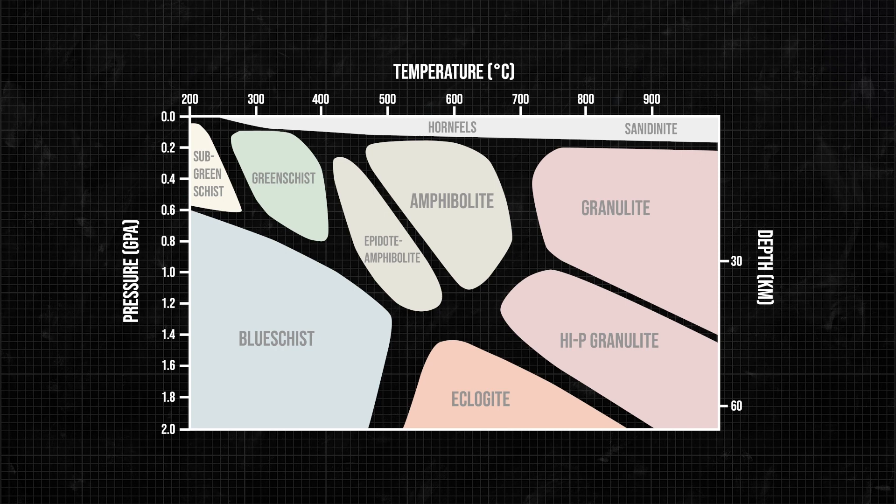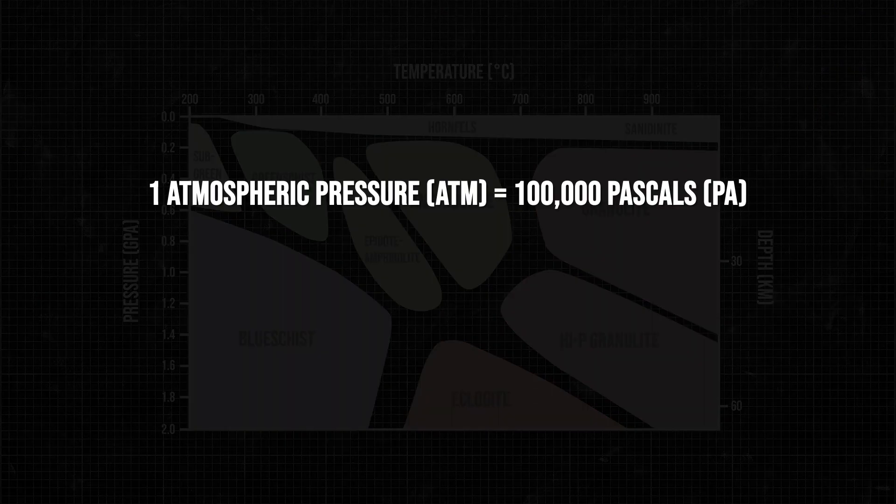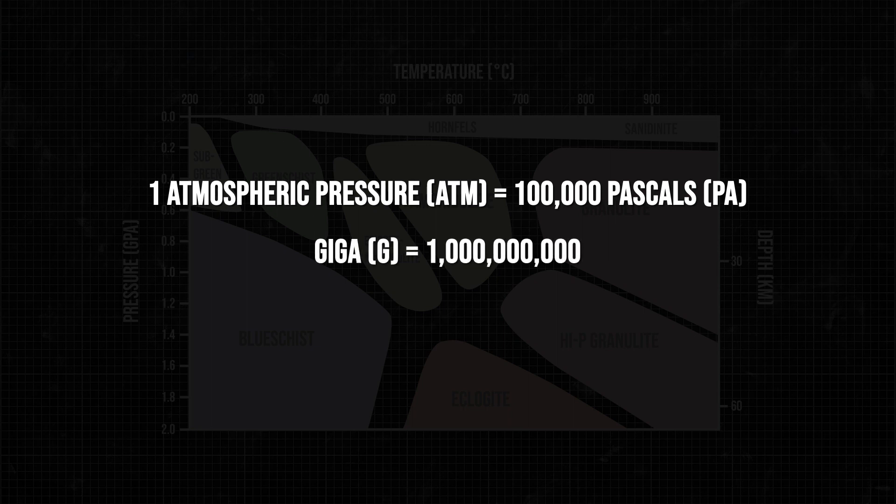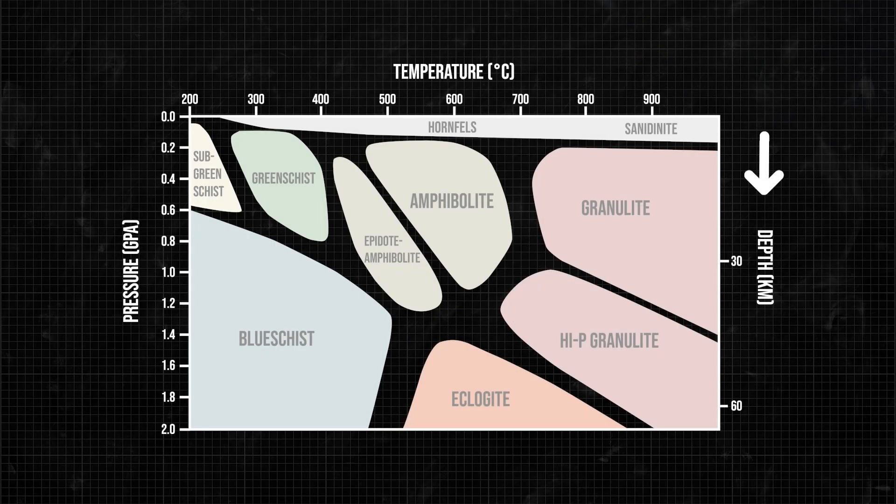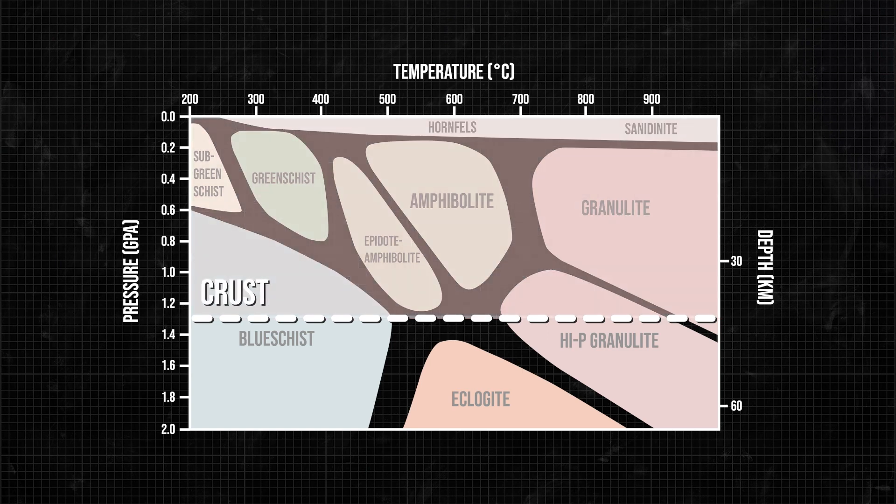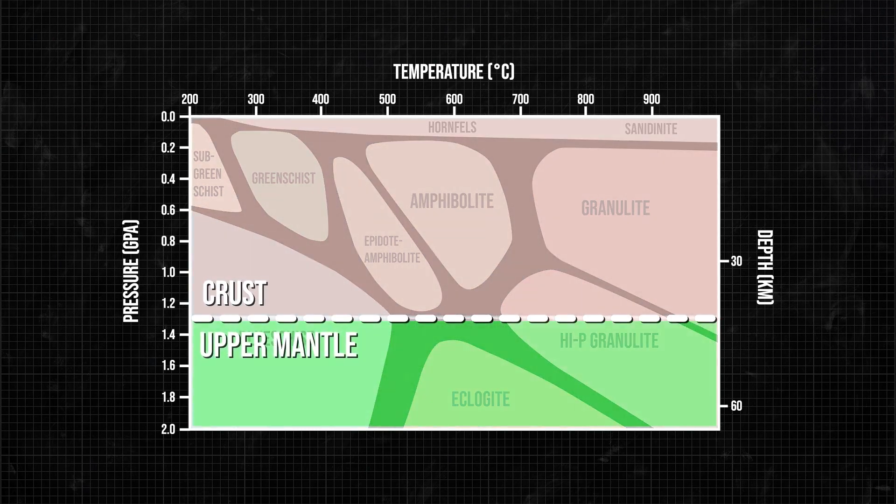Pressure is a function of depth in the earth, so we can show two scales, one on the left showing pressure in gigapascals and written GPa. As a side note, atmospheric pressure is about 100,000 pascals, and giga means one billion. So, one gigapascal is about 10,000 times atmospheric pressure. The scale on the right converts pressure into depth in kilometers. Note that normal continental crust is 40 kilometers thick, so the diagram covers pressure-temperature conditions in the crust and the upper mantle.